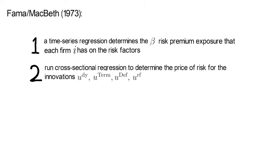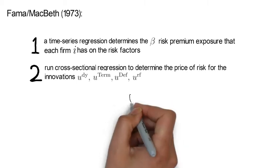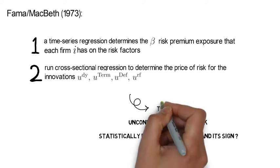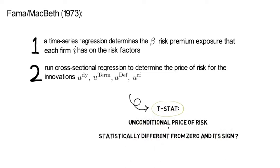And note that the t-statistic will tell us whether the unconditional price of risk for these innovations is statistically different from zero and it will also tell us the sign, whether it's a positive risk premium or a negative risk premium.